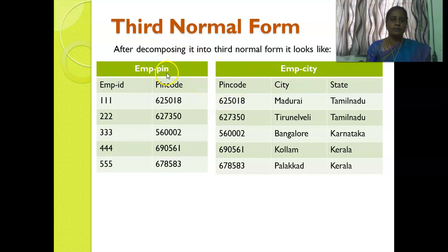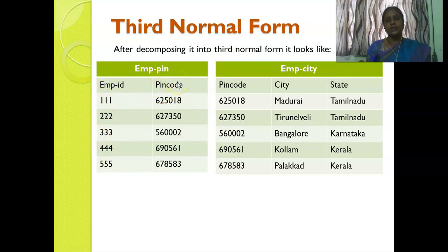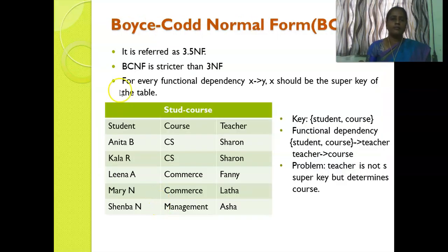After decomposing the table, we get two tables: an EMP_PIN table having employee ID and pin code — here employee ID determines pin code — and a second table where pin code determines city and state. This satisfies third normal form.